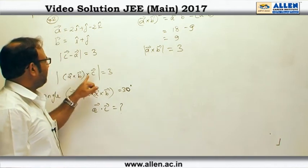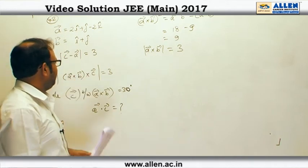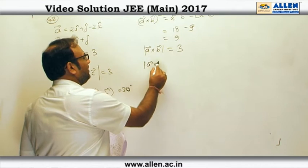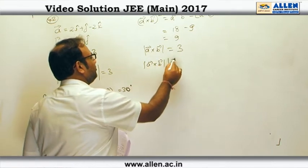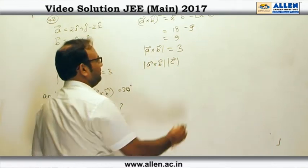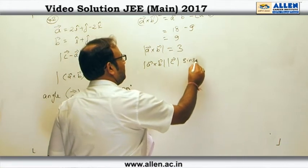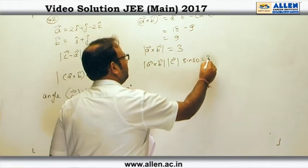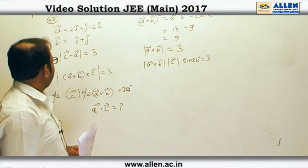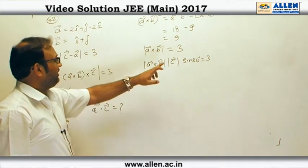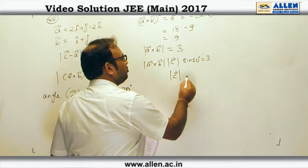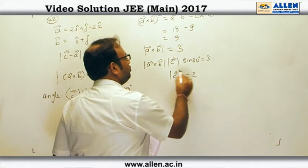Utilizing this, we can get |C|. By the basic definition of cross product, |A×B| · |C| · sin(30°) = 3. The modulus |A×B| we found is 3, so 3 and 3 cancel, giving us |C| = 2.